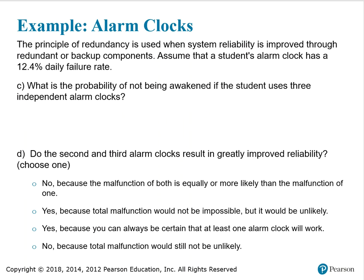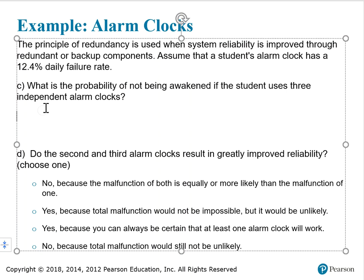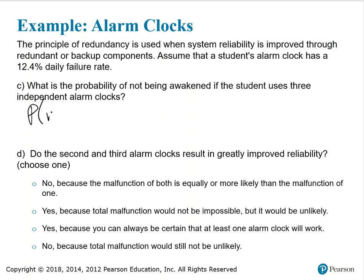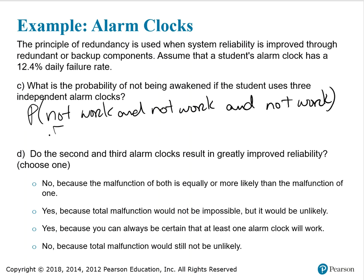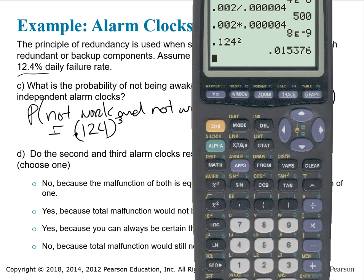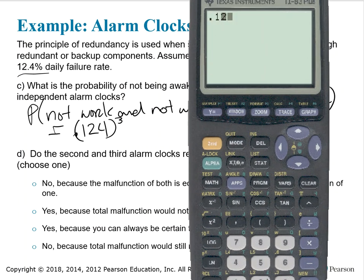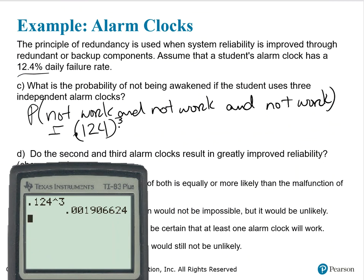What is the probability of not being awakened if a student uses three independent alarm clocks? The probability that all three will not work is: not work AND not work AND not work, equal to 0.124 to the third power — 0.124 × 0.124 × 0.124. That gives approximately 0.00191, so if a student uses three alarm clocks, the probability of not being awakened is about 0.00191.